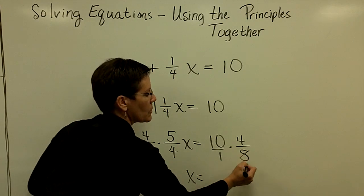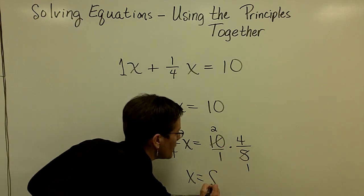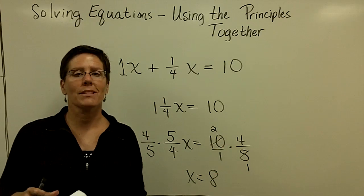And let's see, let's reduce this. 5 goes into here once and into here twice, and 2 times 4 is 8. My solution to that problem is x is equal to 8.